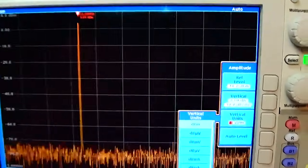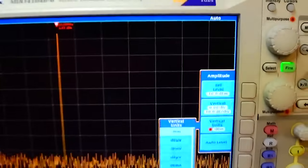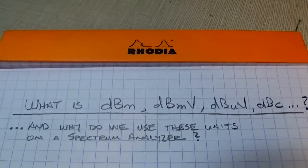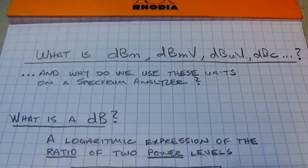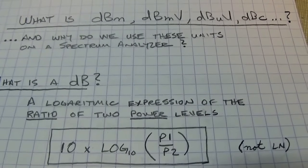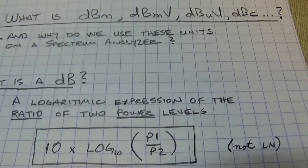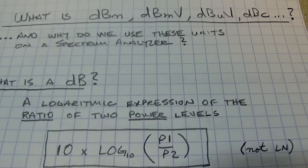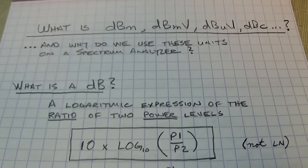In this video we're going to try to answer the question: what is dBm, dBμ, or dBmV, and why do we use these various units on a spectrum analyzer? To answer that question, we first need to address what is a dB. A dB, or decibel, is a logarithmic expression of the ratio of two power levels. The general equation is 10 times the log base 10 of the ratio between two power levels. It's important to note that it's the logarithm base 10, not the natural log.